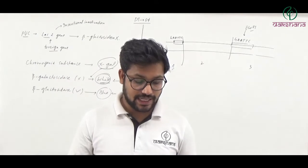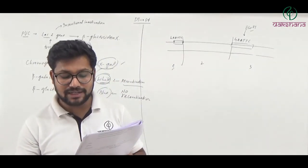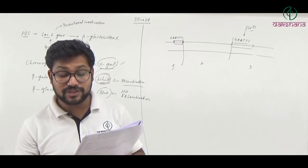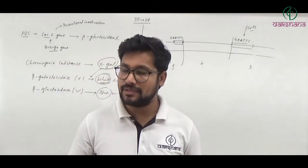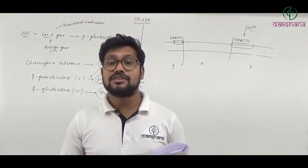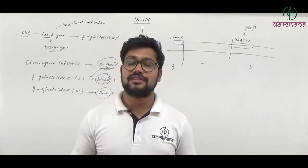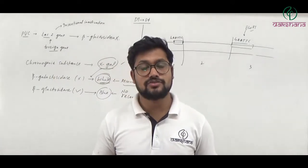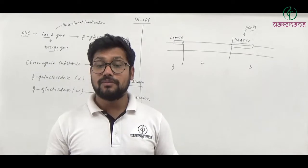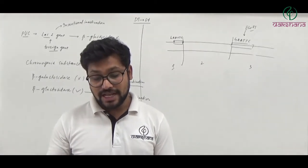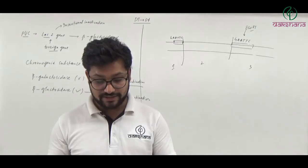Question number twenty: Unequivocal proof that DNA is the genetic material came from the experiment performed by Alfred Hershey and Martha Chase. Question number twenty's second option is the right answer.